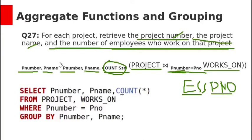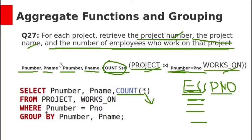The equivalent SQL query is: SELECT P_number, P_name, count(*) FROM project, works_on WHERE P_number = P_num GROUP BY P_number, P_name. Here P_number and P_name are the grouping attributes. You can use count(*) or count(ESSN) — count(*) counts the number of tuples. If you want to use inner join syntax: SELECT P_number, P_name, count(*) FROM project JOIN works_on ON P_number = P_num GROUP BY P_number, P_name.